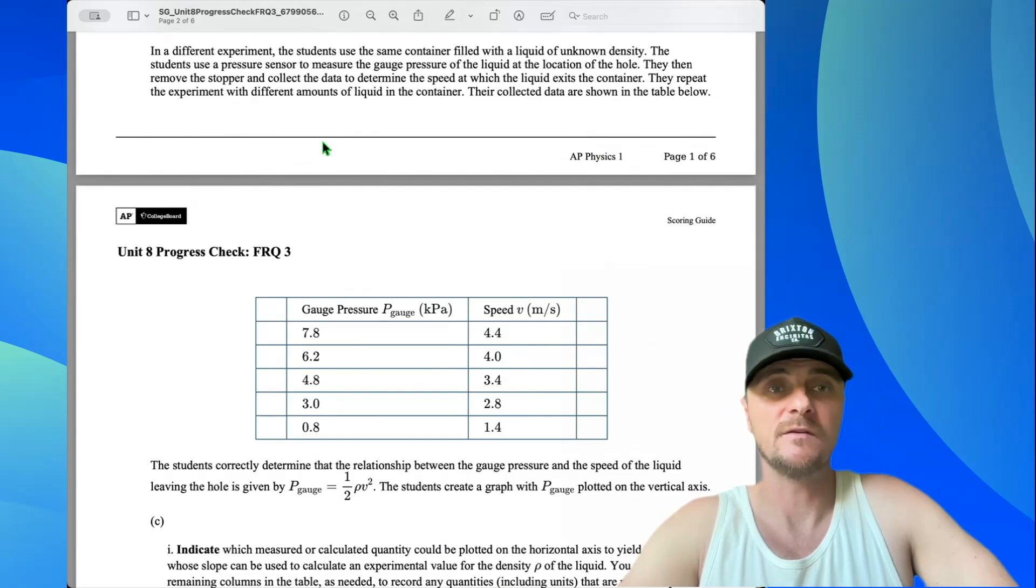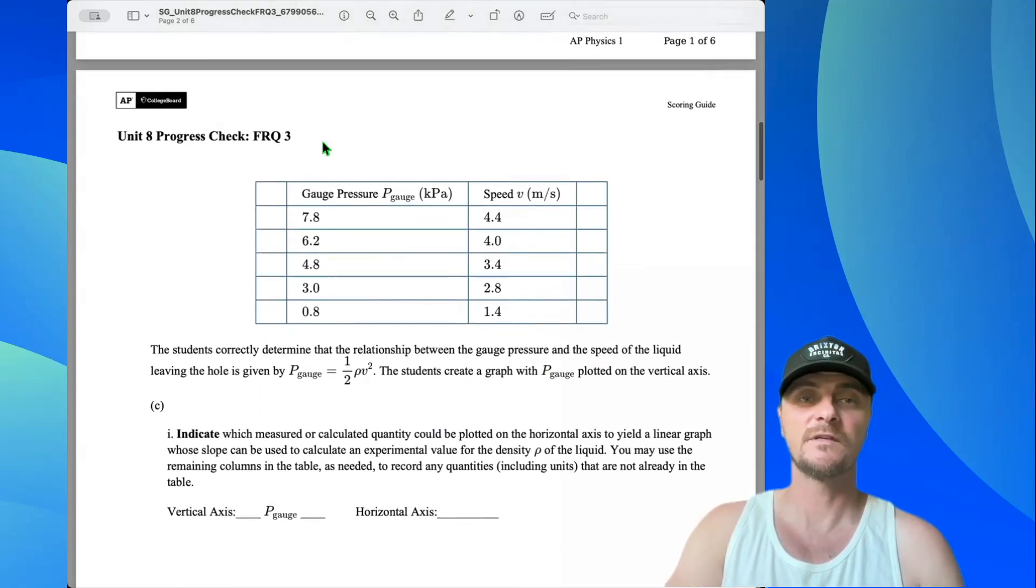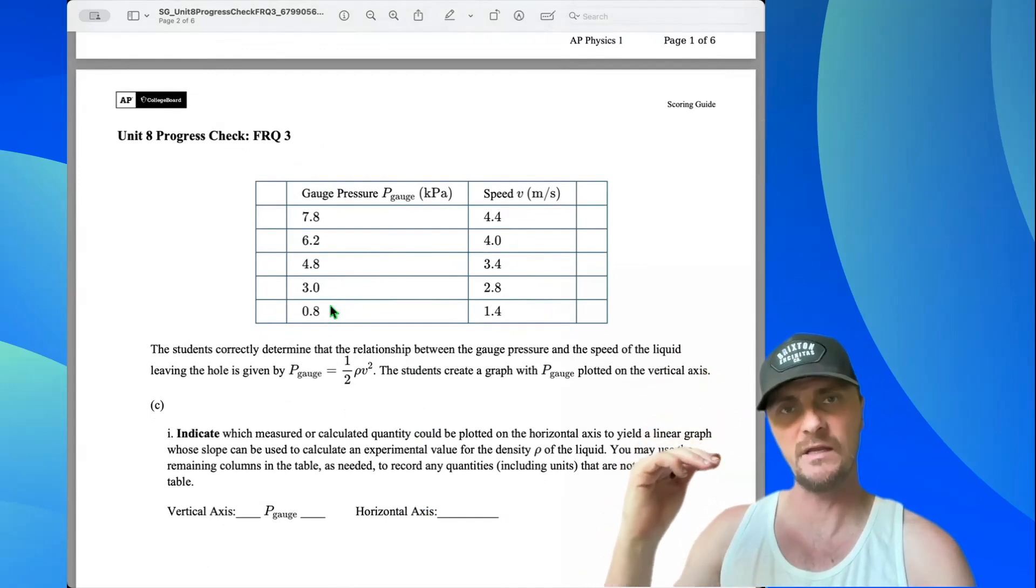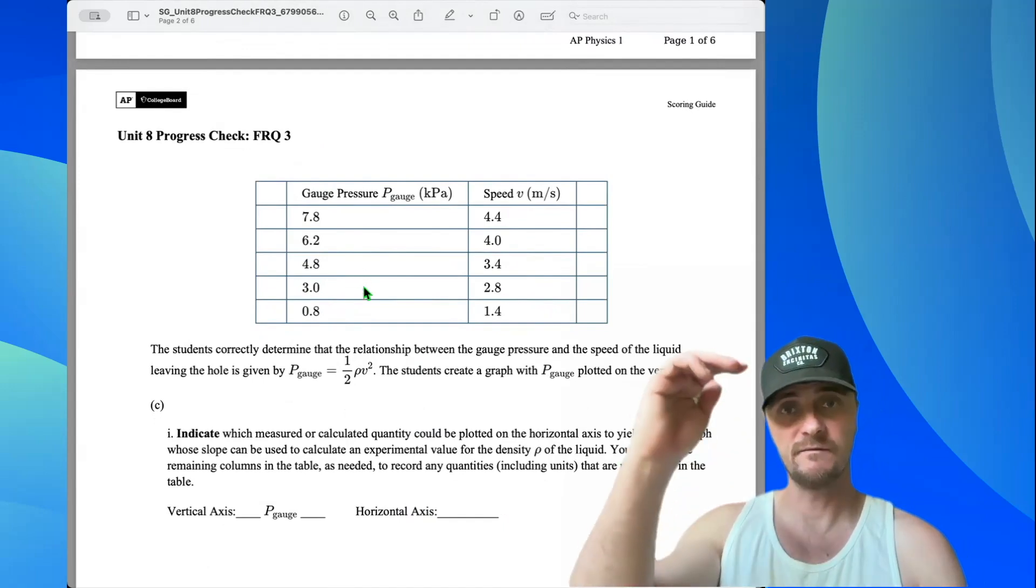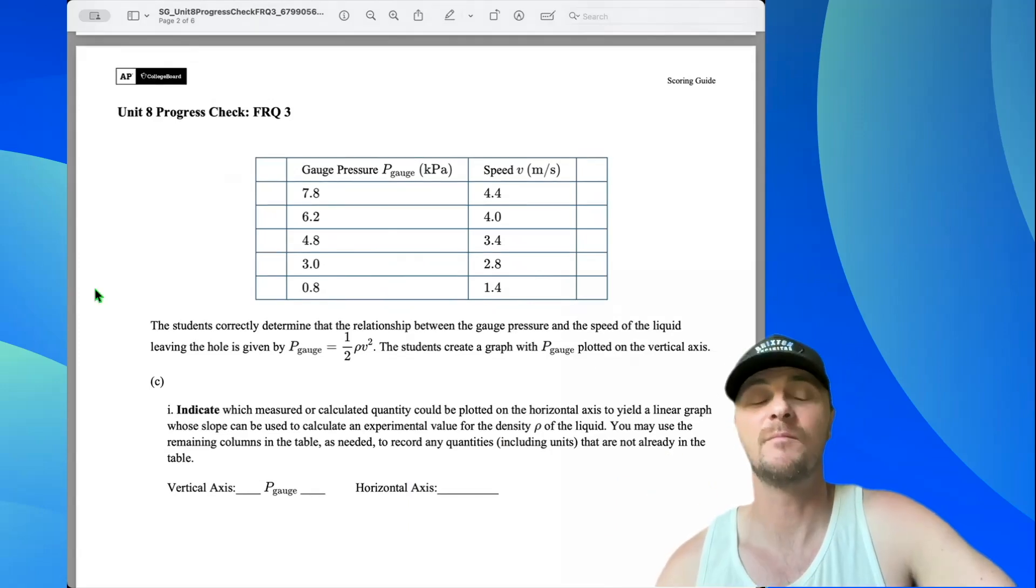In a different experiment, the students use the same container filled with a liquid of unknown density. The students use a pressure sensor to measure the gauge pressure of the liquid at the location of the hole. They then remove the stopper and collect the data to determine the speed at which the liquid exits the container. They repeat the experiment with different amounts of liquid in the container. Their collected data are shown in the table below.